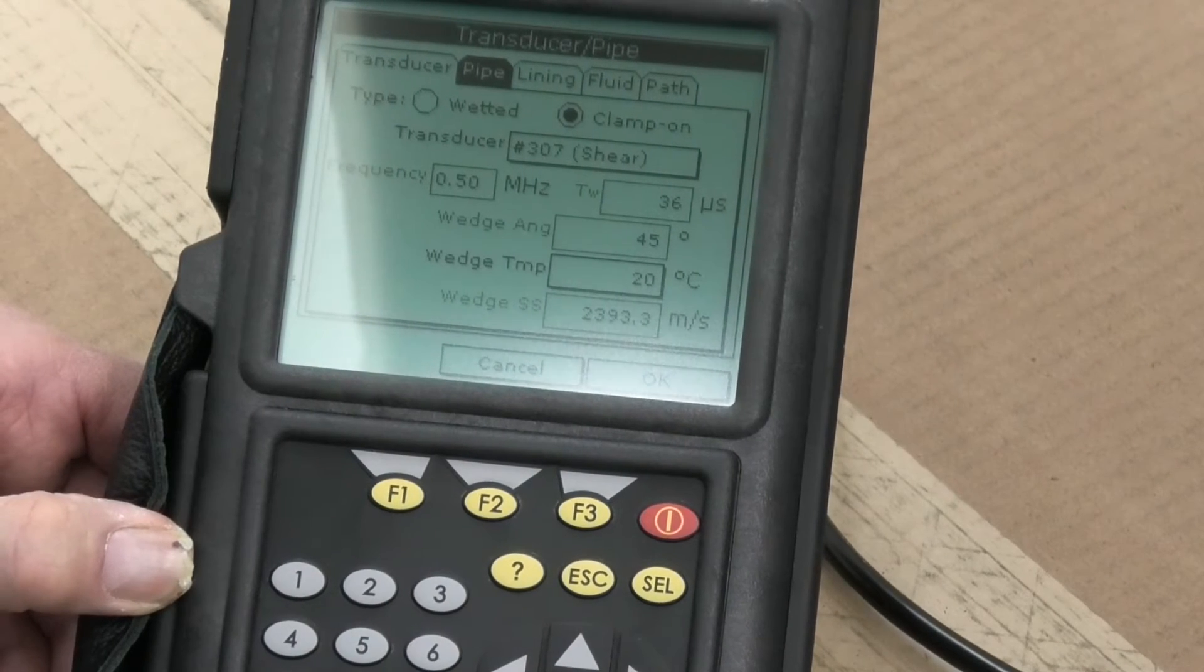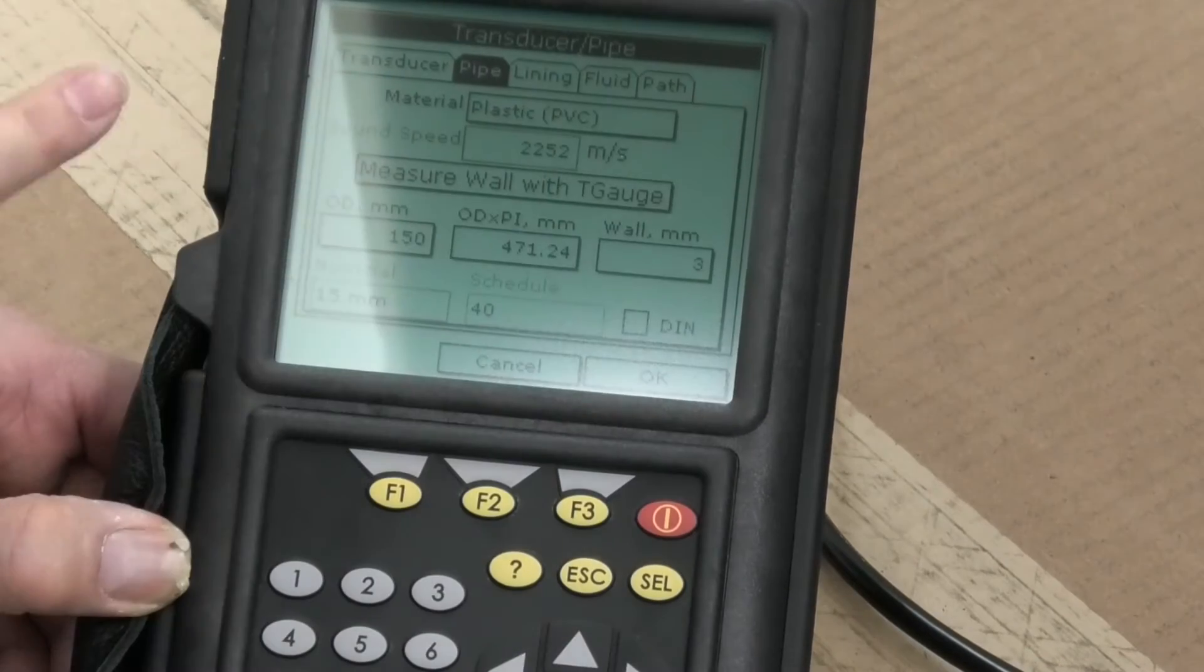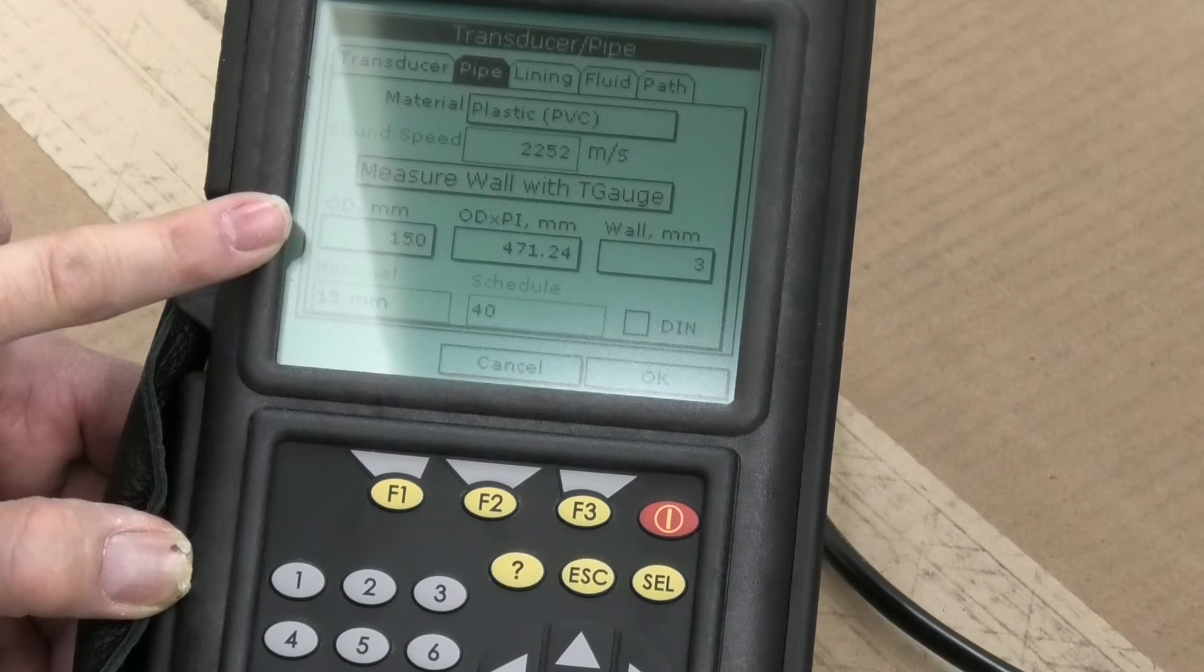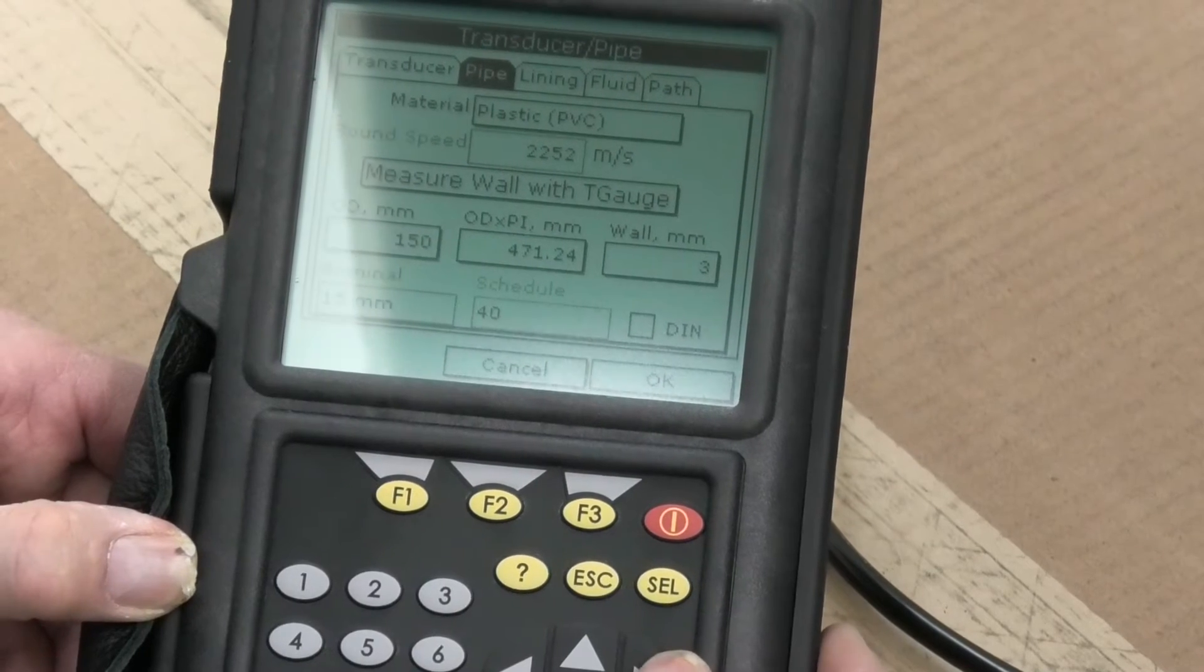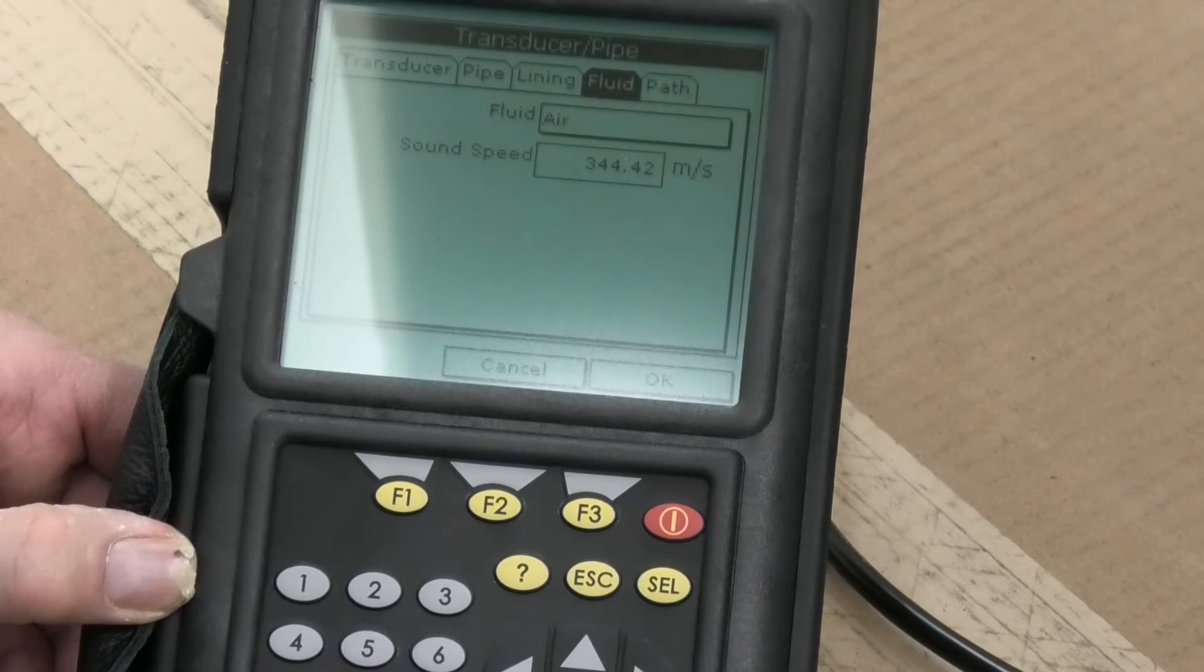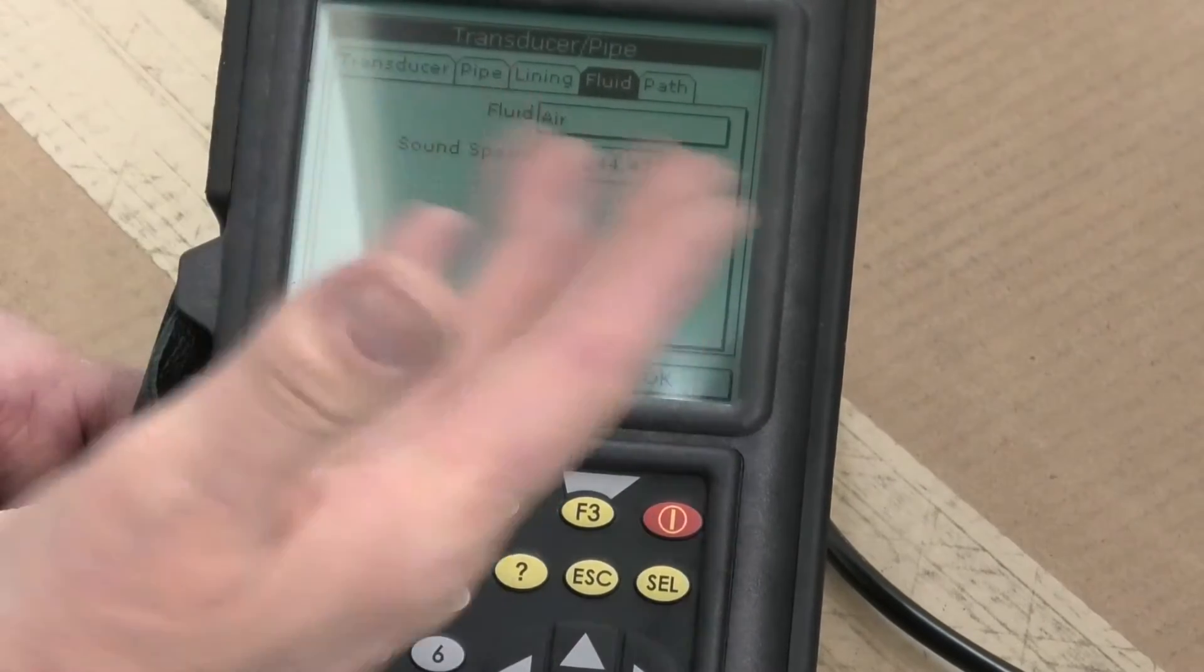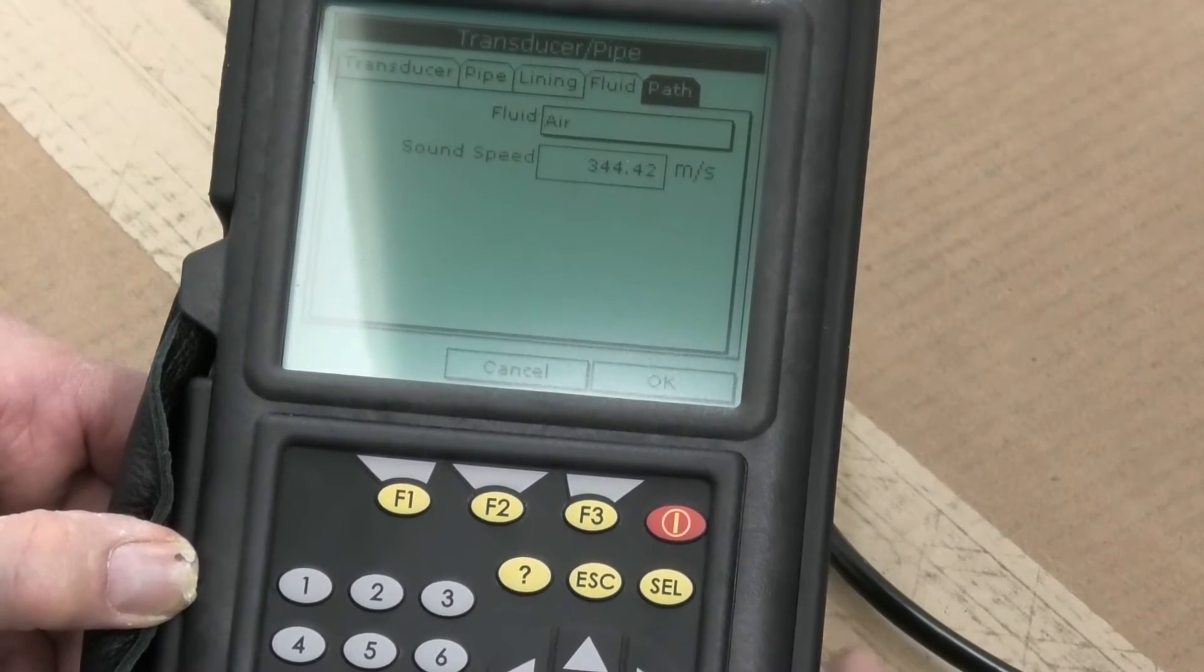In this case if I go enter on there for the pipe it will jump to that panel. Now I'm using a plastic pipe and we happen to know we've got the dimensions of this 150 by 3mm. It's not lined and the fluid we're putting through it is air, and the sound speed is 344.42 which is standard sound speed for air.